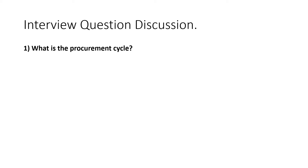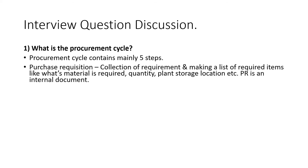The first question is: what are the procurement type cycles, meaning what processes are involved in the procurement cycle, also known as the P2P cycle? It mainly contains five steps. The first is the purchase requisition — creating the PR means collecting requirements from the internal team for the material they need.